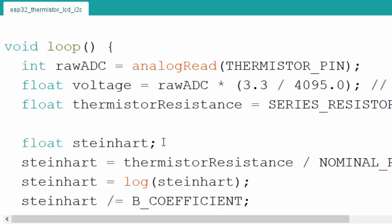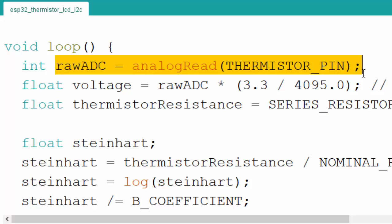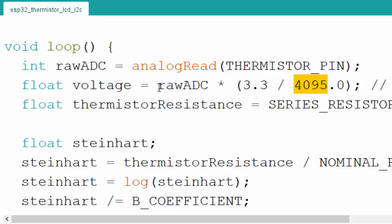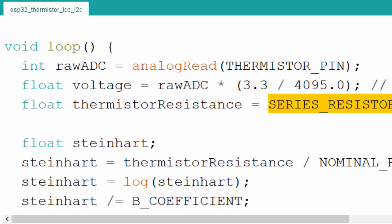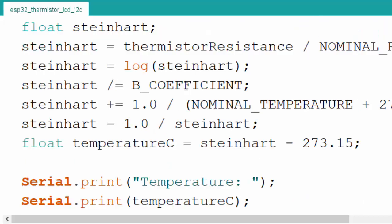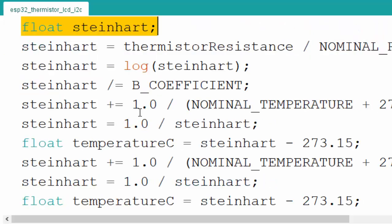In the loop we implement the Steinhart equation. We read raw ADC values from the analog channel, then convert to voltage by multiplying by 3.3 (maximum voltage on ESP32) and dividing by 4095 (12-bit ADC). With this equation we get the voltage from the raw ADC, and we convert it to thermistor resistance by dividing the series resistance by (3.3 divided by voltage minus one). This equation gives us the resistance value from the voltage divider, which is used for the Steinhart equation calculation.